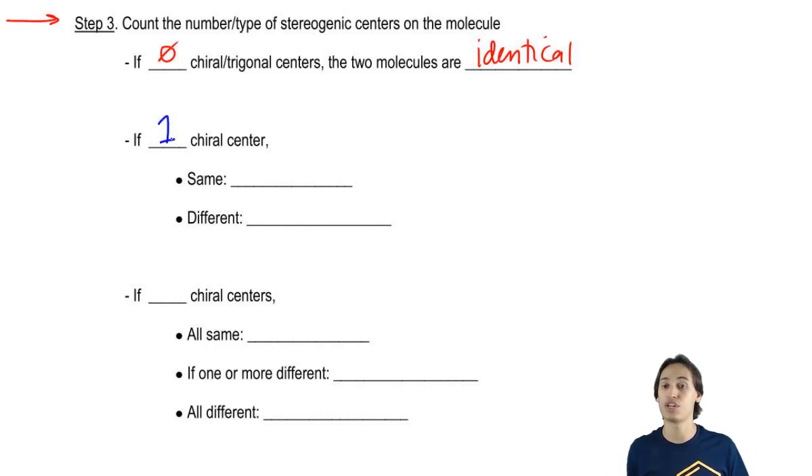But what if you do have one chiral center, which happens all the time? Well, if you have the same chiral center on both, then they're identical.